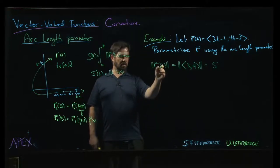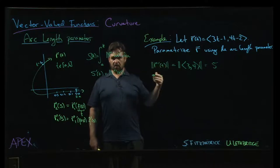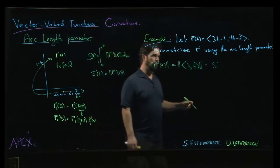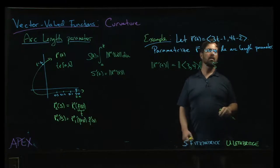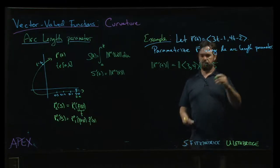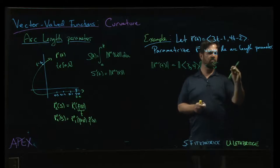So if you think about what that means, magnitude of r prime, we interpret that as speed. So this is a line. I suppose we could plot it. Why don't we draw it? Let's draw it.